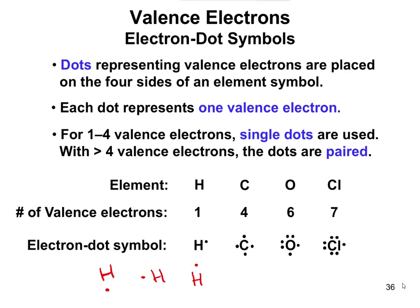For oxygen, with six valence electrons, it's going to have two paired and two unpaired electrons. Now, you could draw that actually a couple different ways. You could draw it like this, and then the pairs there. So again, it doesn't matter how you do it as long as there's two pairs and two unpaired ones. For chlorine, with seven, there's going to be one lone guy and then three pairs.